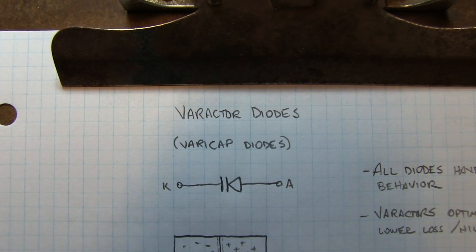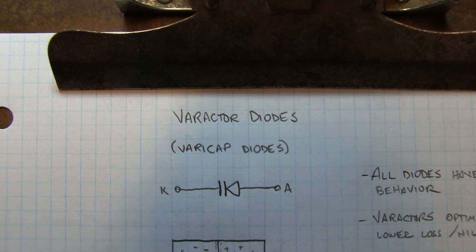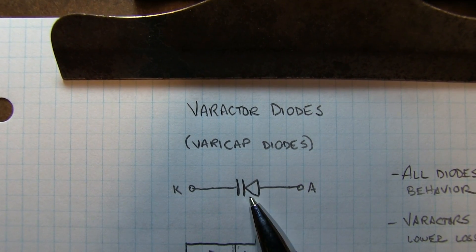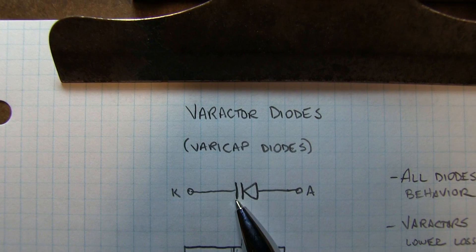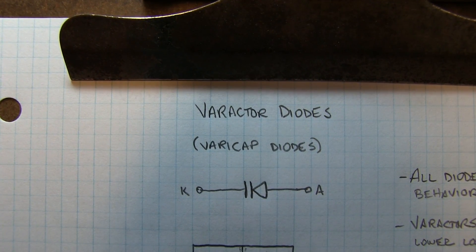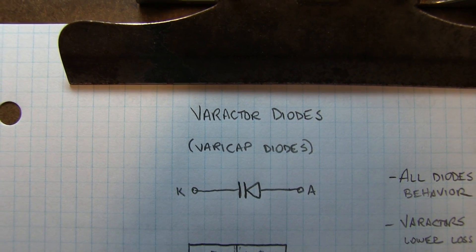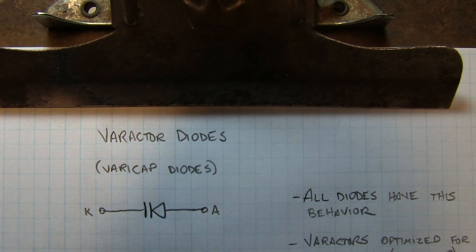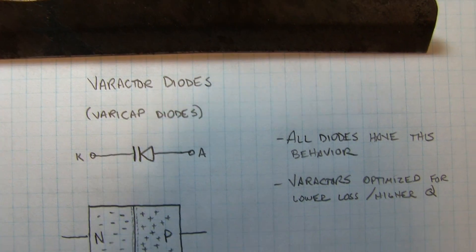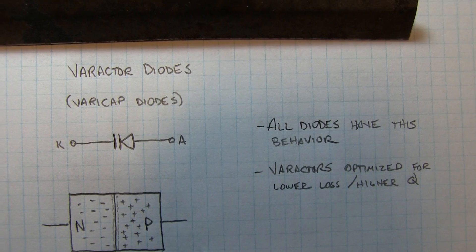In this video, we're going to talk about varactor diodes, also known as varicap diodes. The common schematic symbol looks like an ordinary diode symbol except that there are two lines for the cathode. A varactor diode, or varicap diode, is essentially a voltage variable capacitor. Now all diodes exhibit this behavior, but varactors are optimized for lower loss and higher Q.